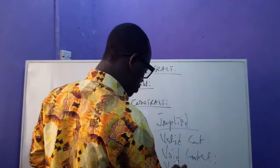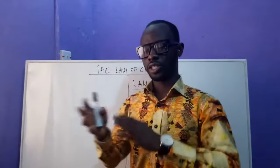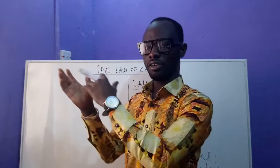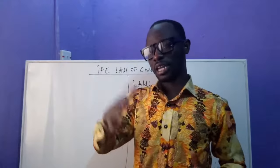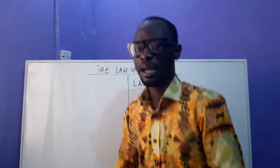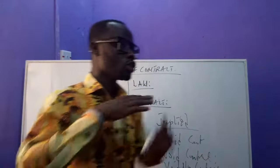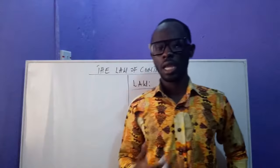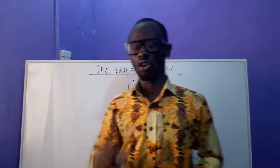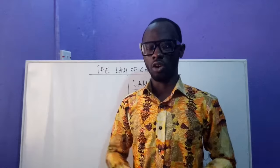Then we have voidable contracts. A voidable contract can be considered in two ways. A contract is voidable when it is valid but lacks some technical requirements, or it is valid but can become invalid when a minor becomes a major. I will explain all of that later as we continue.